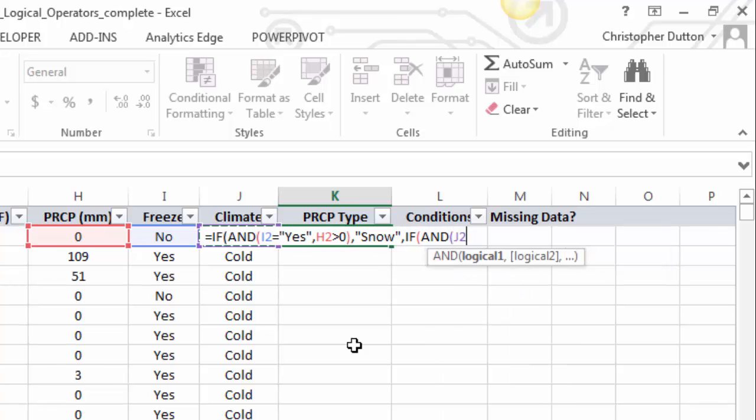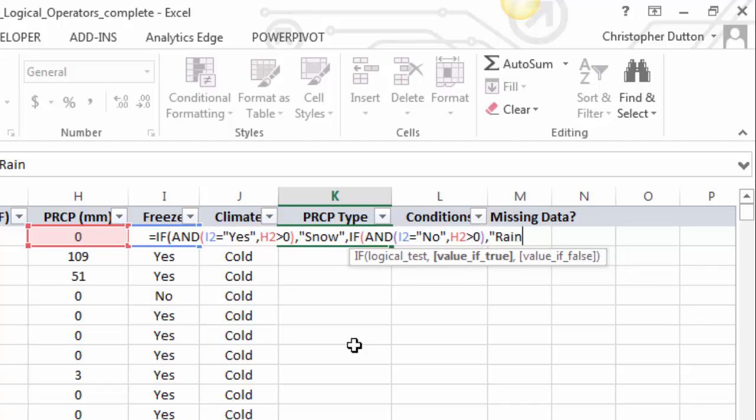In this case, I2, the freezing field, is going to be equal to no. So temperature is above 32 and precipitation is greater than zero. Close that out, comma over to value of true for this test, and that's going to be called rain. And then my last comma gets me to my final value if false. So if none of these tests are true, what do I want to return? And I just want none here.